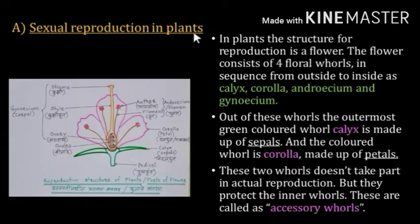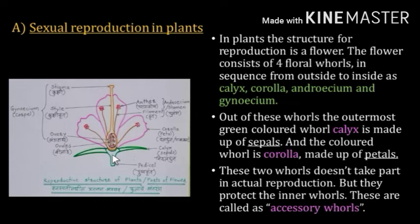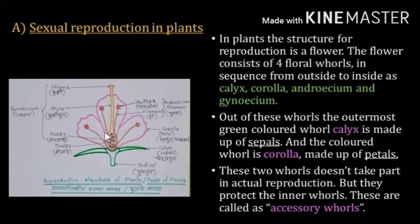Now, sexual reproduction in plants. In plants the structure for reproduction is a flower. The flower consists of four floral whorls arranged in sequence from outside to inside. A whorl means the individuals are arranged in a circular manner. The outermost whorl is the calyx, then inside is the corolla with colorful petals, then the androecium, and the central most part is the gynoecium.